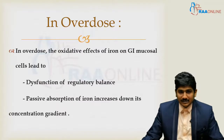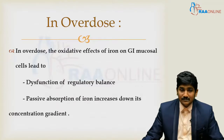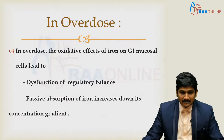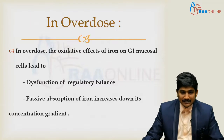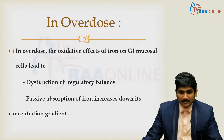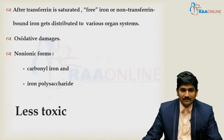In overdose states, the oxidative effects of iron act on the gastrointestinal mucosal cells, leading to dysfunction of this regulatory balance. A passive absorption of iron then occurs across the intestinal walls that increases down its concentration gradient — the more you consume, the more will be absorbed. This regulatory balance is lost after transferrin is saturated.